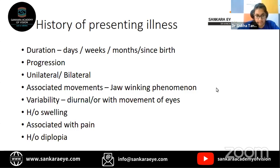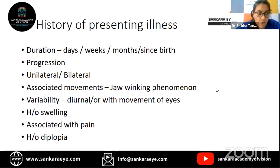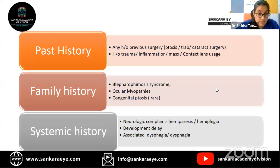Fourth, whether it is associated with any sort of movement — you can ask the parents whether while clenching of teeth, chewing, or in an infant while feeding or sucking the thumb, there is any alteration of the eyelid position. Then variability — whether there is any diurnal variation, which obviously points toward myasthenia gravis. Next, whether it is associated with any sort of swelling, which can point toward mechanical ptosis — a hordeolum, cellulitis, or an entity known as blepharochalasis. Whether it is associated with pain suggests inflammatory pathology, and whether there is a history of diplopia, which requires thorough extraocular motility assessment.